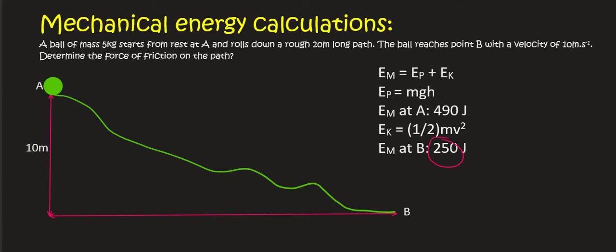And so if we want to work out the energy that was lost, so I'm going to say E lost, then it's 490 minus 250 and that's 240 joules. That is the energy that was lost. And that lost energy is due to friction.